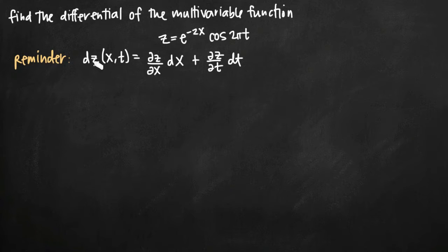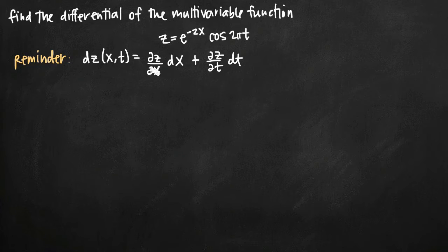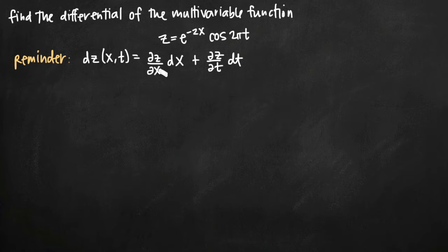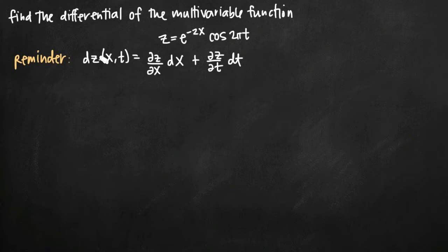dz, the differential, represents the change in height of the tangent plane when we're dealing with multivariable functions. Finding the differential is just as simple as finding partial derivatives with respect to the other two variables — in this case x and t. If we find the partial derivatives with respect to x and t, we can plug them into this formula and get a value for dz.